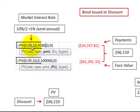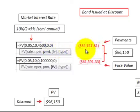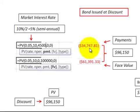So we put in our interest rate, number of periods, and the payment amount. We calculated the present value of those annuity payments to be $34,747.